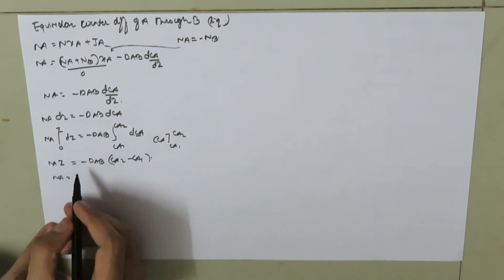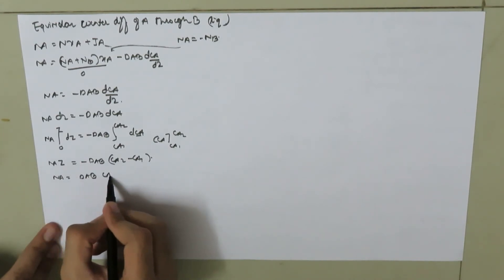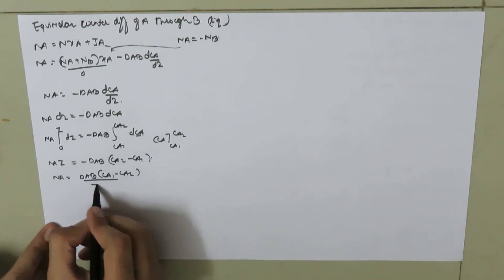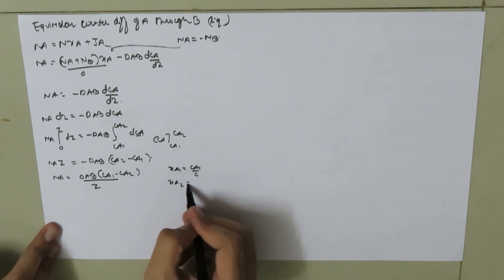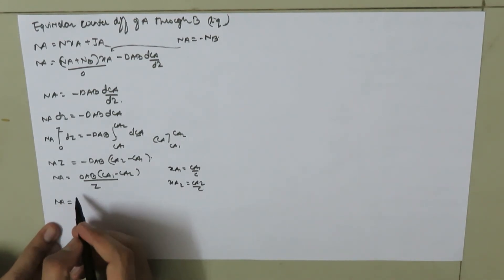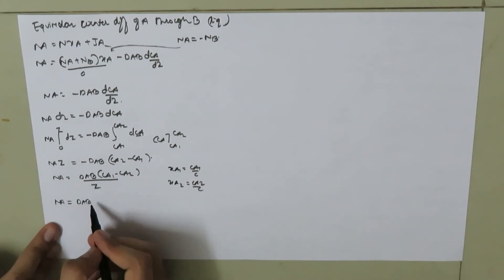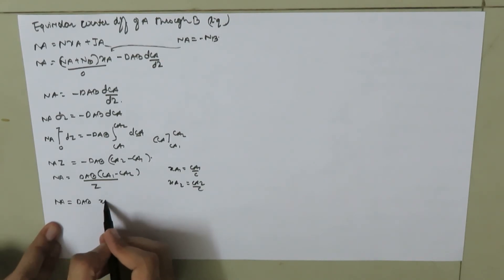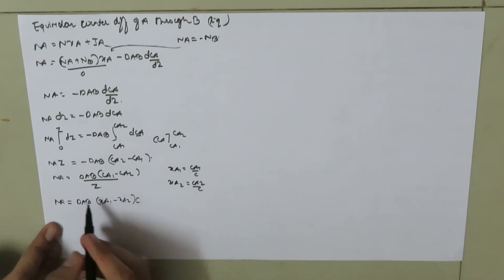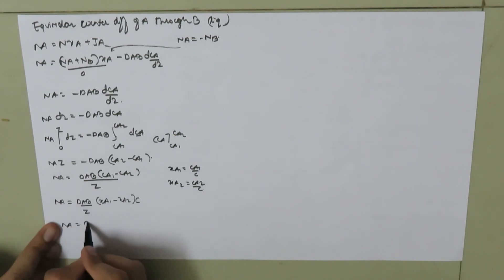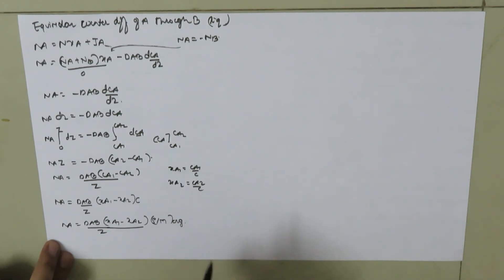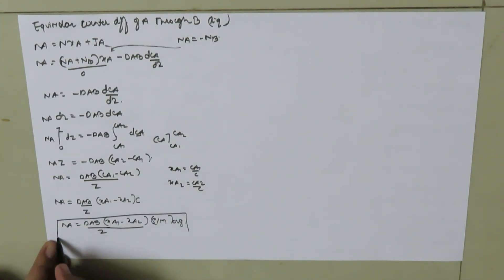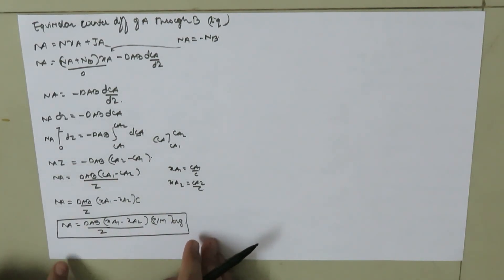This gives Na = DAB·(CA1 − CA2)/Z. Since XA1 = CA1/C and XA2 = CA2/C, we can write: Na = DAB·C·(XA1 − XA2)/Z. With C = ρ/M_avg for liquids: Na = DAB·(ρ/M_avg)·(XA1 − XA2)/Z. This is the equation for steady-state equimolar counter diffusion of A through B in the case of liquid. Thank you for watching.